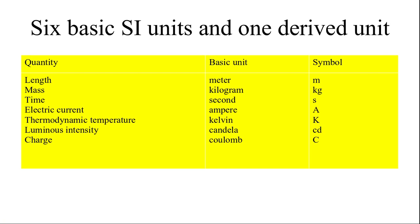I have given 6 basic SI units and 1 derived unit which will be used in electric circuit analysis. These things you might have studied in your school days — like length, mass, time. These quantities are all measured in basic units. Length will be measured in meters, mass in kilograms, time in seconds, current in amperes, temperature in kelvin, and luminous intensity will have the unit of candela. Charge will have the unit of coulomb. This is the symbol of these basic units.